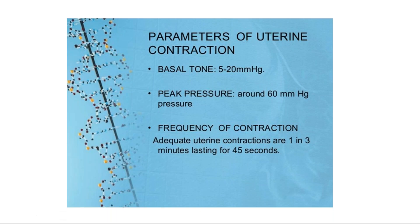The parameters of uterine contractions: basal tone should not be more than 20 mmHg, around 5 to 20. Peak pressure should be around 60 mmHg, sometimes up to 80 in the second stage. Frequency should be three contractions every 10 minutes, each lasting 45 seconds. Uterine contractions are said to be adequate when three occur in 10 minutes, each lasting 30 to 45 seconds. Normal polarity and the physiological gradient must both be maintained.